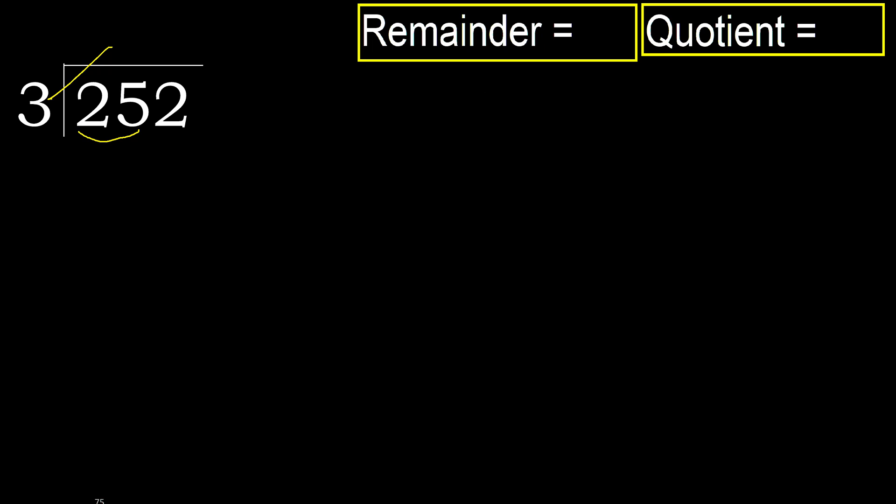3 multiplied by which number is nearest to 25 but not greater? 3 multiplied by 9 is 27 — 27 is greater. 3 multiplied by 8 is 24 — 24 is not greater.